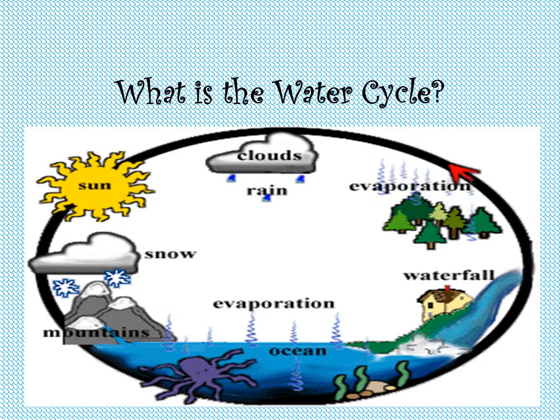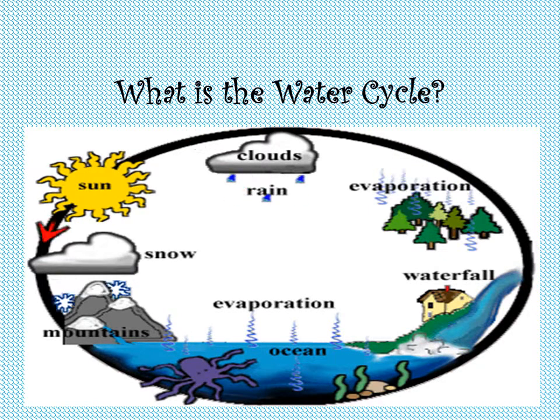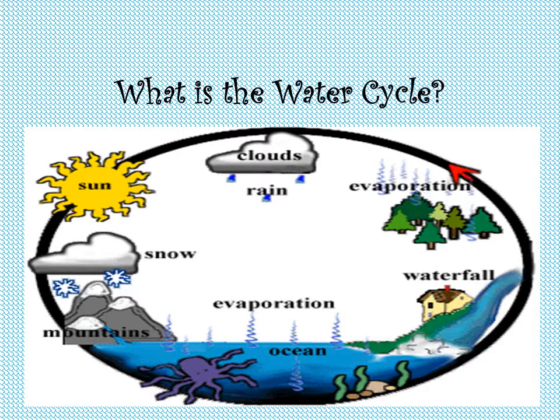They fall like rain, snow, sleet and hail. The water collects into the rivers, lakes and oceans, and the water cycle happens all over again.